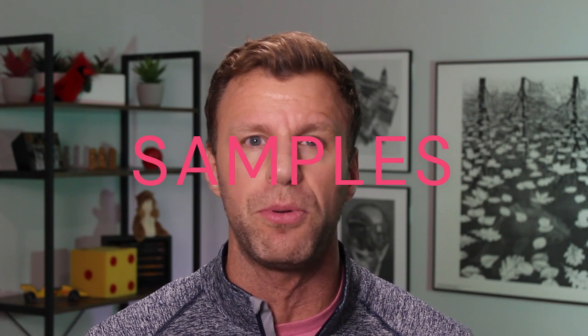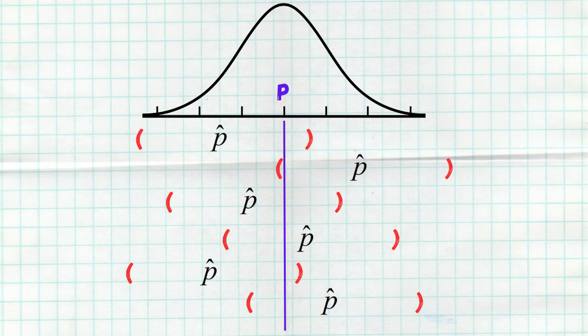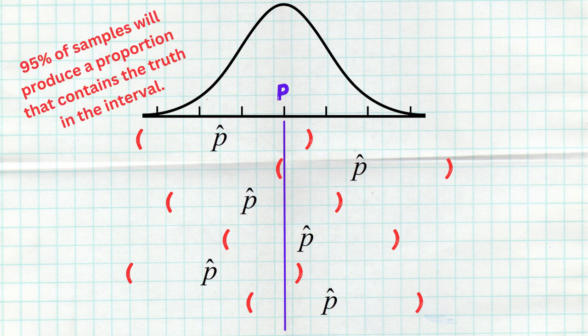Some students will say there's a 95% probability that the truth is in your interval — absolutely not. Or some will say 95% of the time it's in the interval — no, it has nothing to do with time. It's all about samples. If we were to look at many, many samples, every sample would have its own sample proportion, and every one of those could be used to construct a confidence interval. 95% of all those possible confidence intervals, constructed from the same sample size taken from the same population, would contain the true population proportion. We're just 95% confident that ours is one of them.